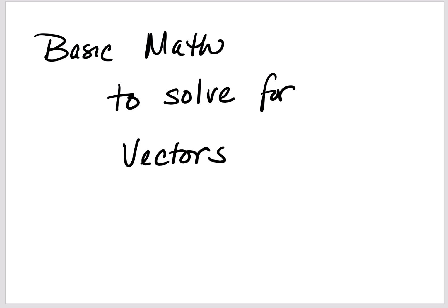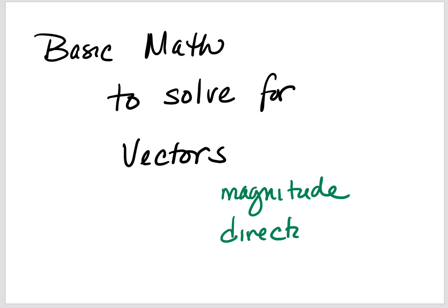Basic math to solve for vectors. Since vectors have magnitude, which is how big something is — the amount — and direction, we must always account for direction.